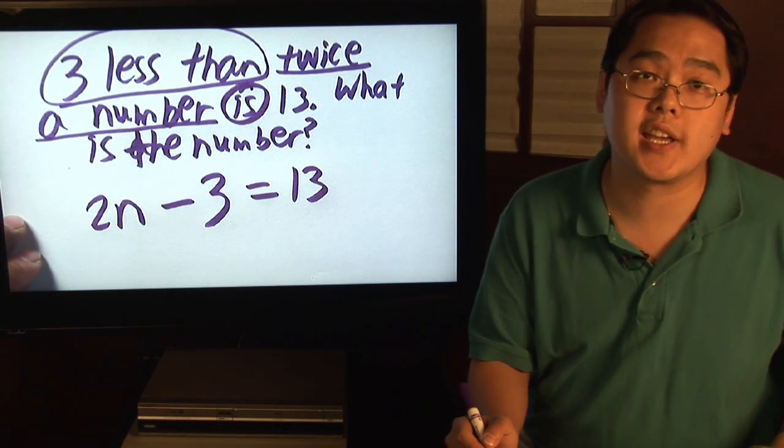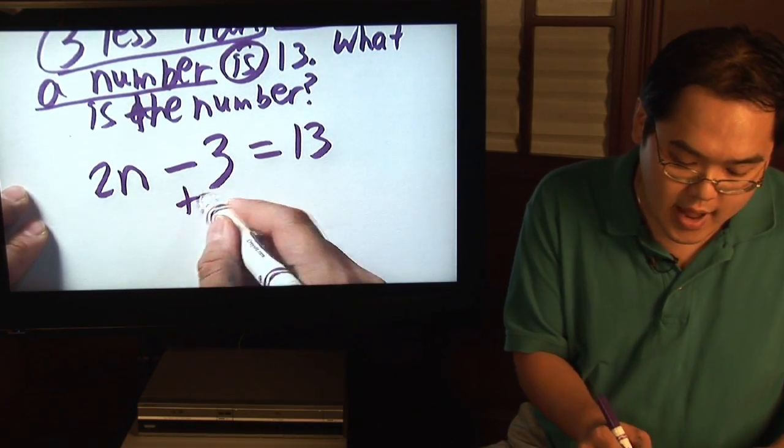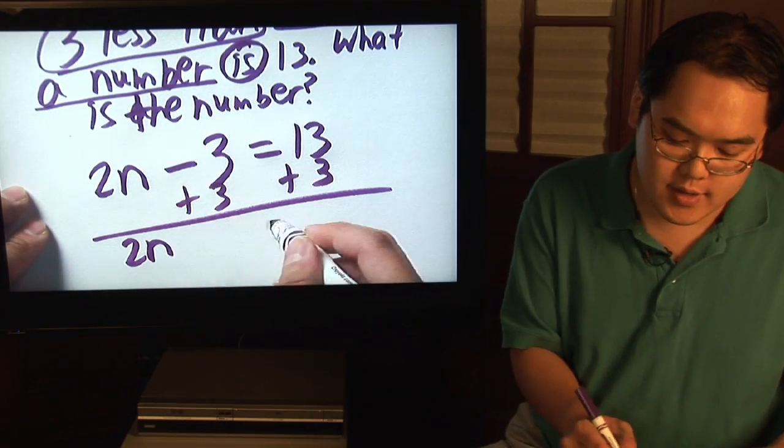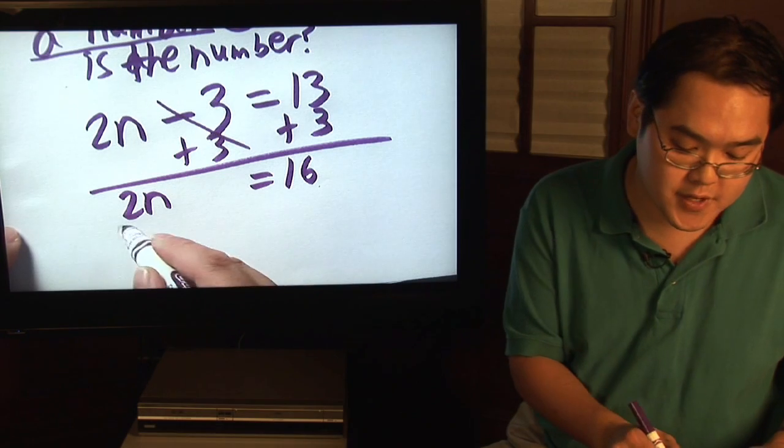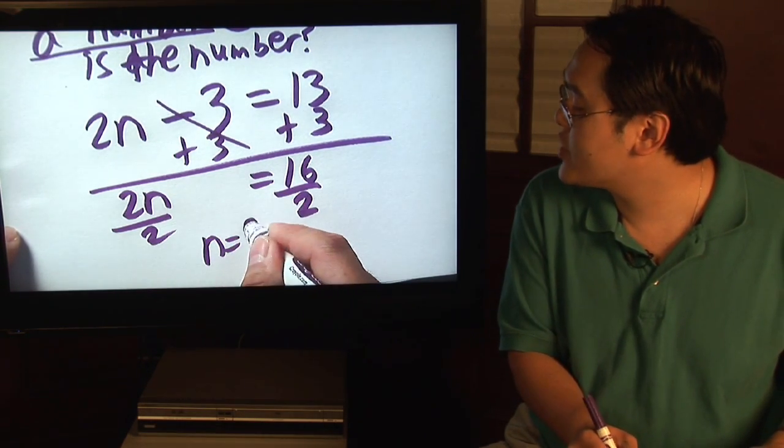Now, to solve for it, it's just like any other algebra equation. Just get n by itself. Add 3 to both sides. You're going to have 2n, the threes cancel, equal to 16. And then the last step to get n by itself, divide both sides by 2. And you'll have as a result n equals 8.